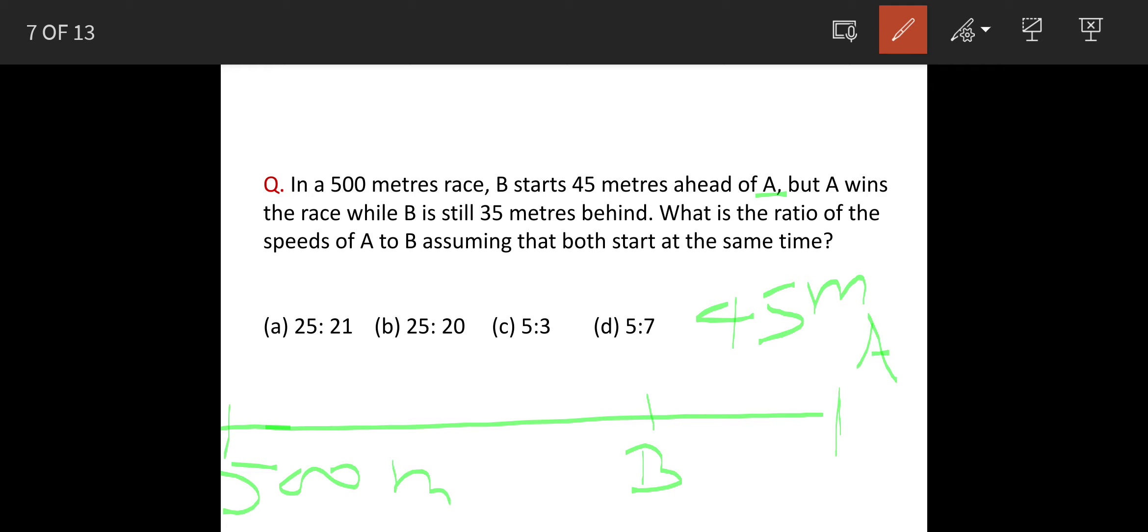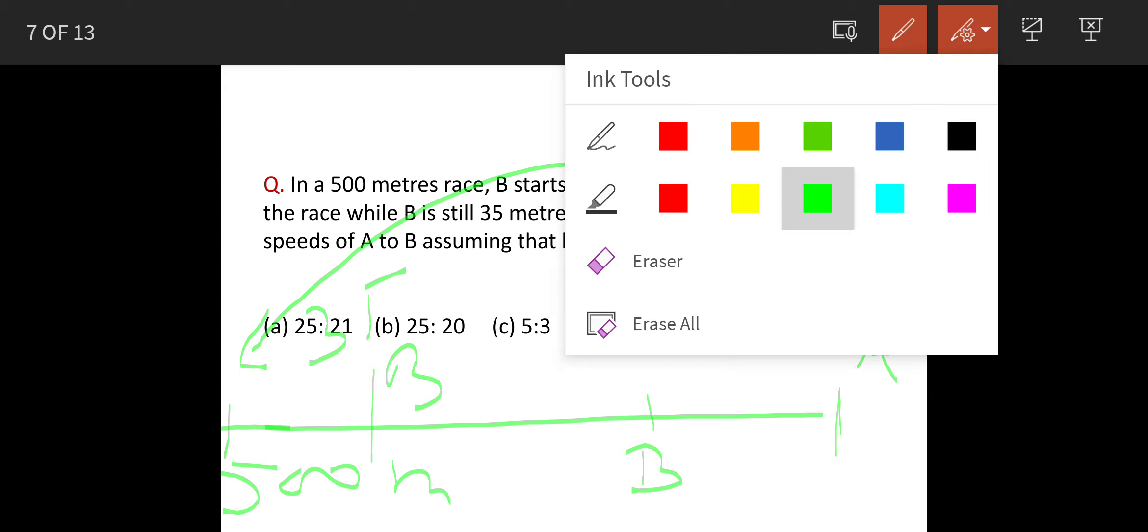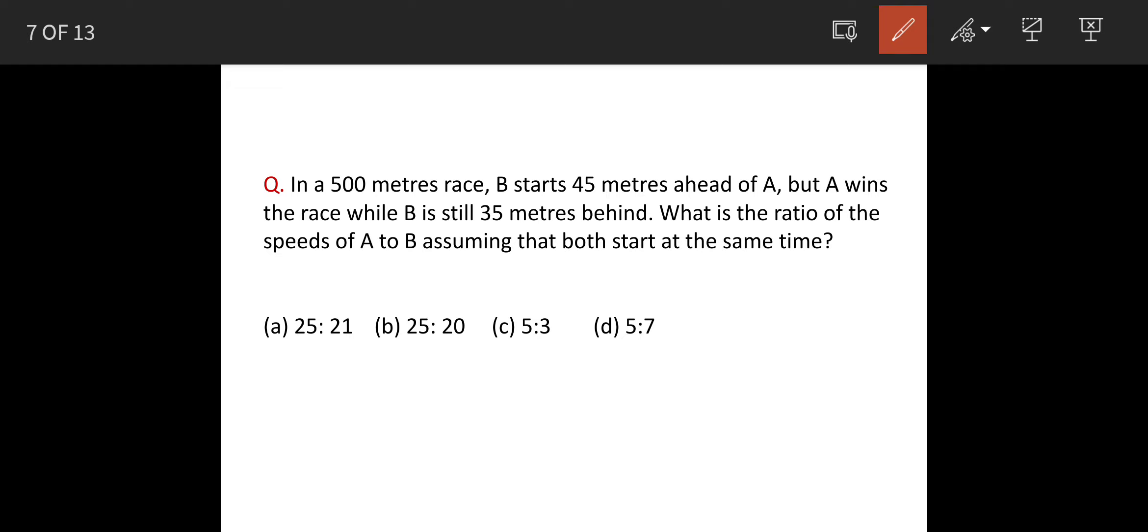Now the race is won by A, and when A has won the race, B is still 35 meters behind. So the question is what is the ratio of speeds of A and B, assuming that both start at the same time?